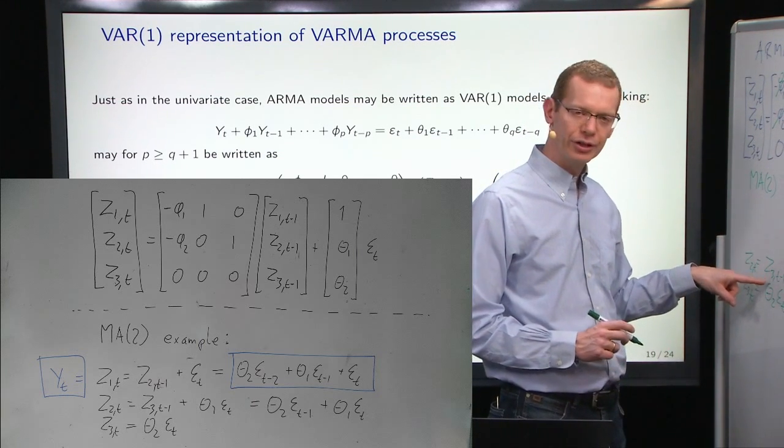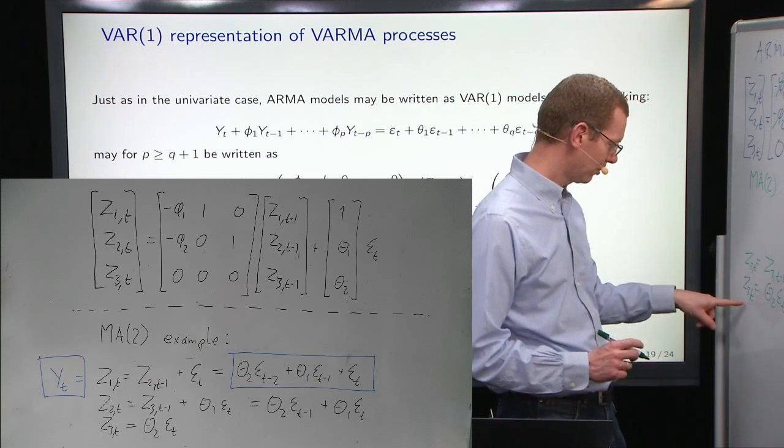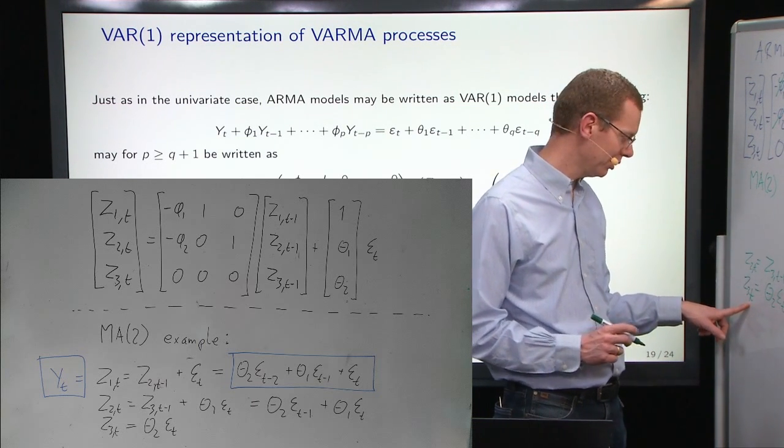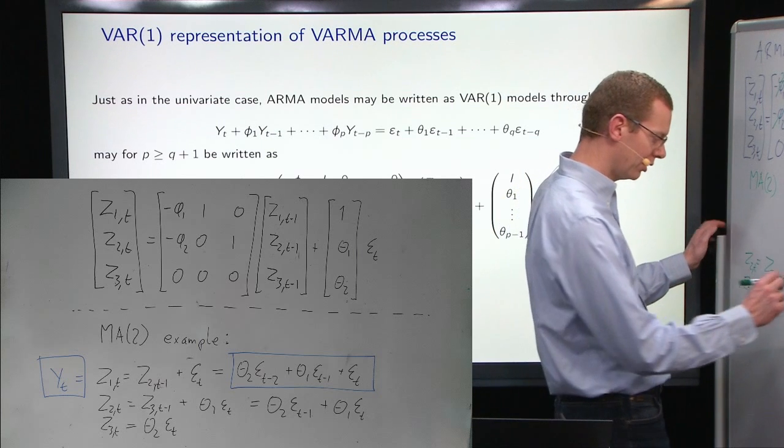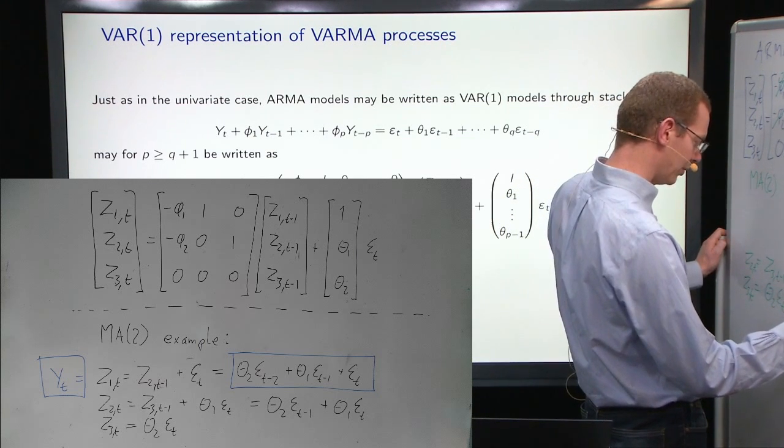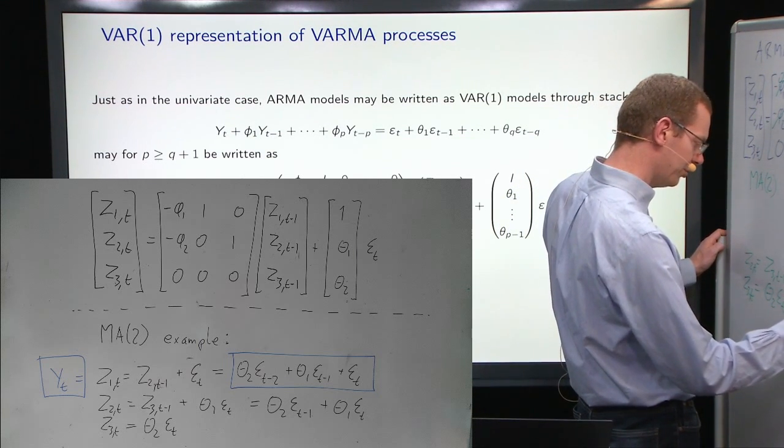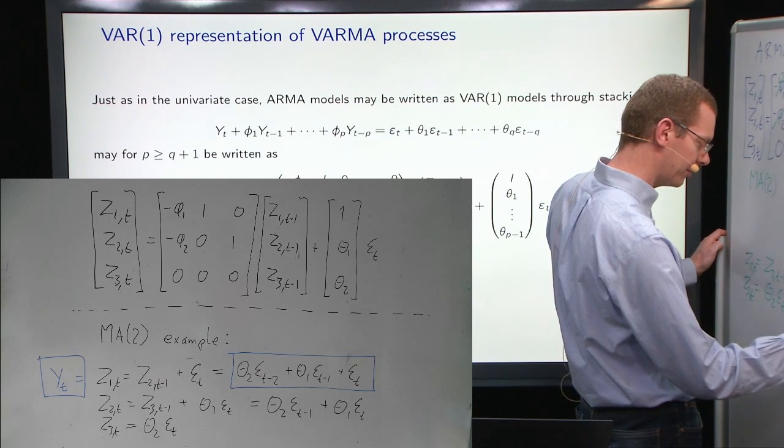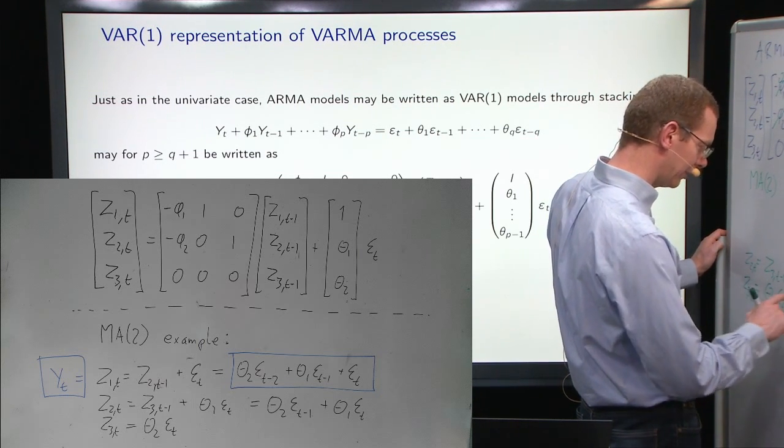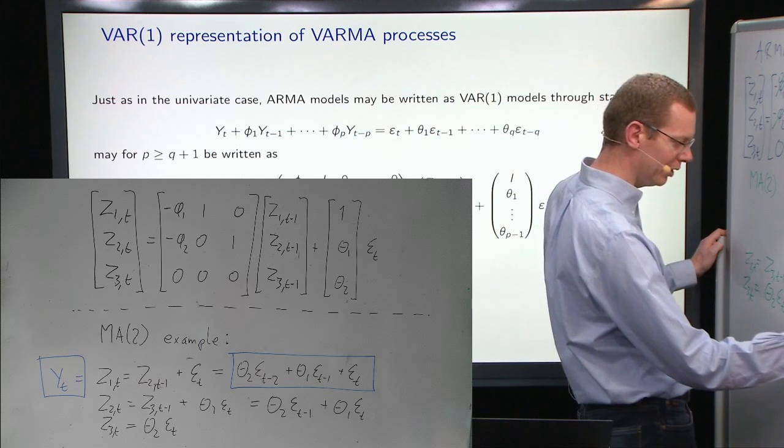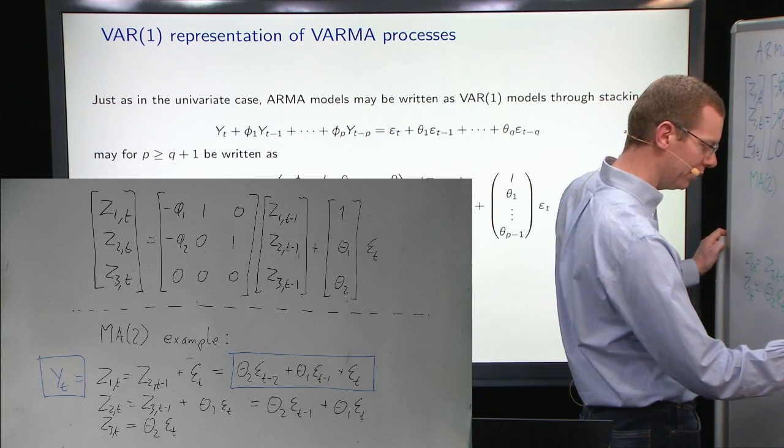Now, what is z3,t minus 1? Well, we have z3 just down here. We just need to shift time. So, this is equal to theta 2 epsilon t minus 1. And then we have from here plus theta 1 epsilon t.